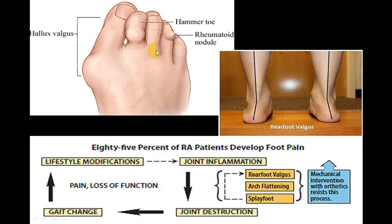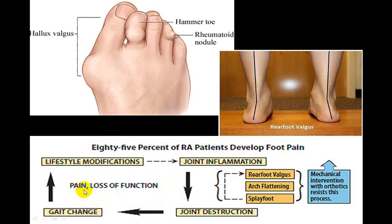In the foot, hallux valgus (abduction deformity at the first metatarsophalangeal joint) can occur, along with rheumatic nodules, pes planus (flat foot), and valgus deformity. These produce changes in gait, pain, and loss of function — features of chronic rheumatoid arthritis.